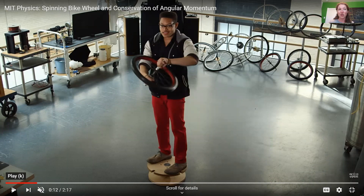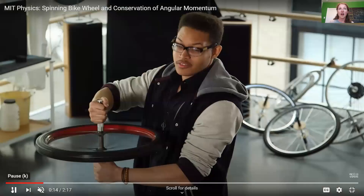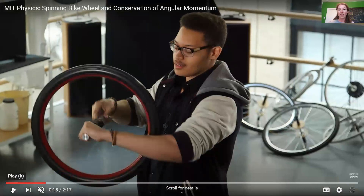Now what's going to happen when they switch it back to its original configuration? You might think we'll have to rotate the other way, but that's actually not true. What happens is that the person stops, because if angular momentum has to stay constant, we have to get back to our original state. With the wheel having all of the angular momentum spinning clockwise again, the person and the platform have to stop.